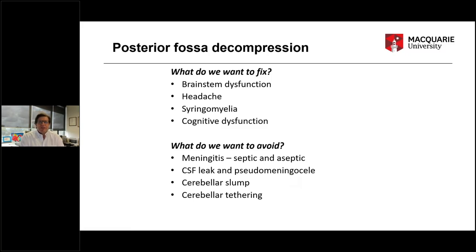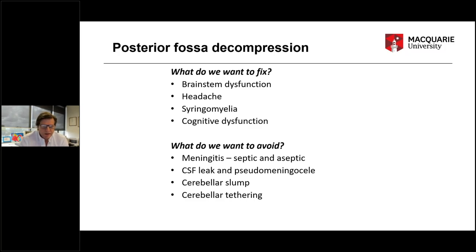In terms of the things we're trying to help patients with, the common surgery for Chiari malformation — sometimes we're trying to fix brainstem dysfunction, meaning things going wrong in the connection between the brain and the spinal cord, but that's uncommon. Much more common, of course, is headache, associated syringomyelia, and brain fog. And in the process, there are things we want to hopefully avoid: infections, CSF leaks, pseudomeningocele.